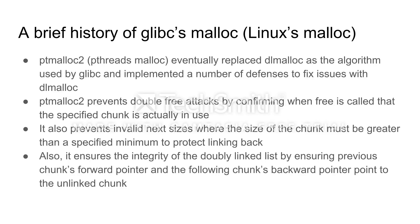This became an extremely common method of exploitation, and Linux was quick to fix it. PTmalloc2, short for pthreads malloc, eventually replaced dlmalloc and implemented defenses to fix those issues. It prevents double free attacks in three ways: it confirms when free is called that the specific chunk is actually in use; it prevents invalid chunk sizes where the size must be greater than a specified minimum to protect linking back, so you can't create a negative size to link back to the previous chunk; and finally, it ensures the integrity of the doubly linked list by ensuring the previous chunk's forward pointer and the following chunk's backward pointer are pointing to the correct chunk about to be unlinked.